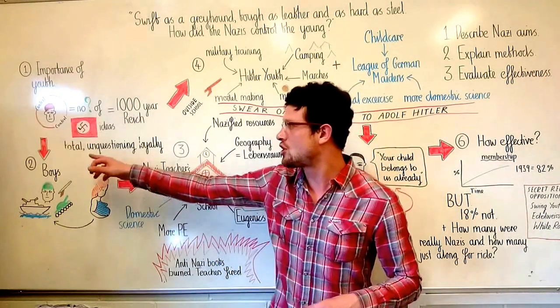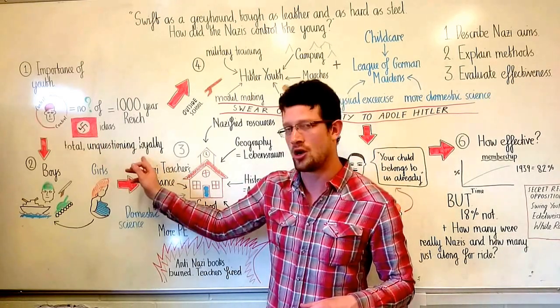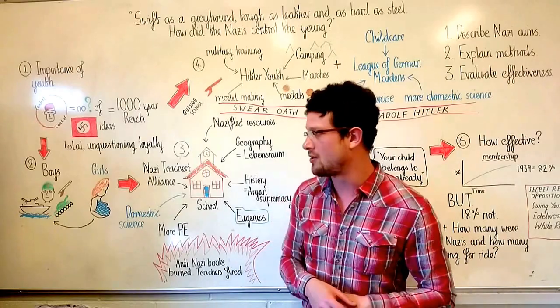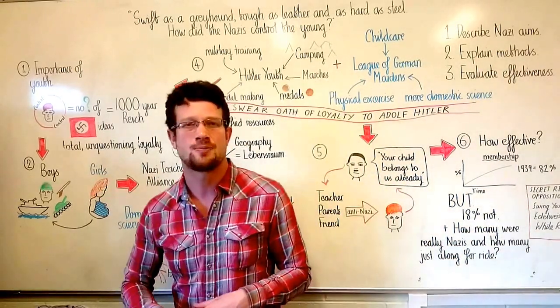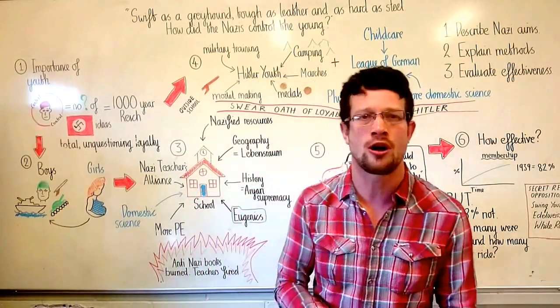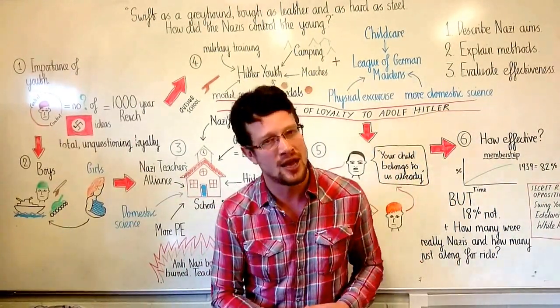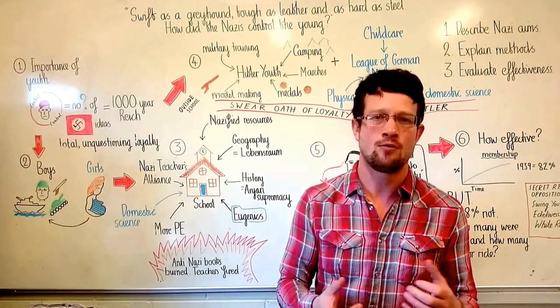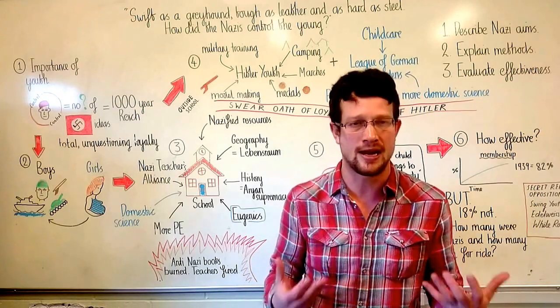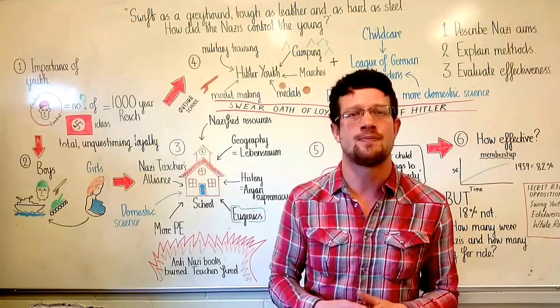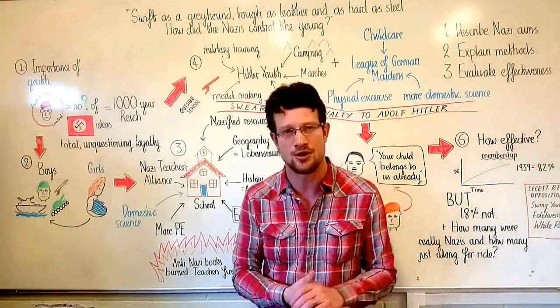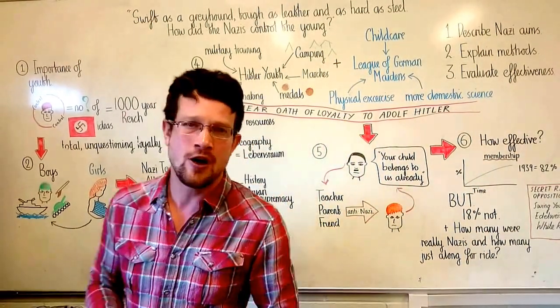So the first thing the Nazis expected from the young was total unquestioning loyalty. Specifically, what they wanted from the young depended on whether you were a boy or a girl. Boys were regarded as being future warriors, so the most important thing was to make sure they would be strong soldiers and strong military commanders. Girls were regarded as less important. Their role was simply to have lots of healthy babies to increase Germany's population and make it stronger, and in the end make sure the German population was large enough to be able to fight and win a major war.